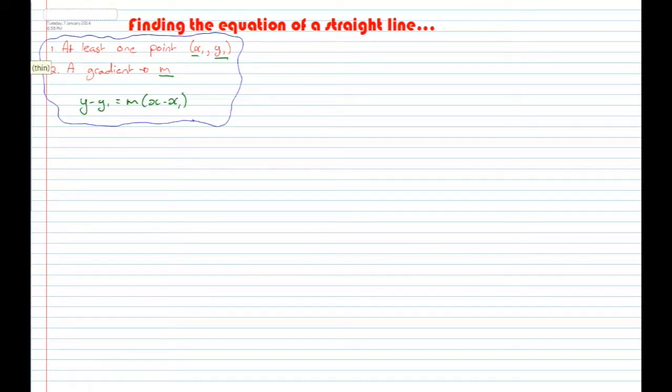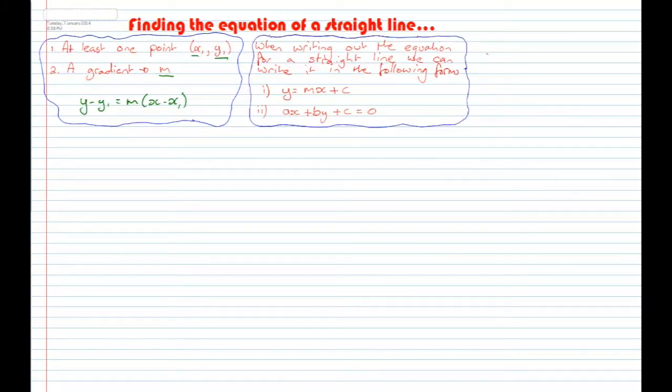That's the first piece of information. The second piece of information is this: when writing out the equation for a straight line, we can write it in the following forms: Y = MX + C and AX + BY + C = 0.